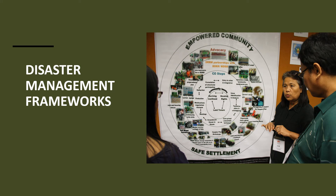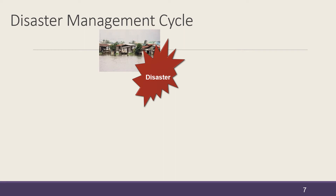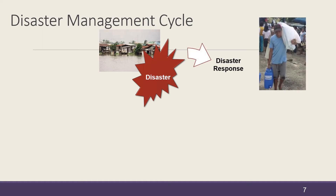Now let's look into some common disaster management frameworks. The most common framework looks into the different phases of disaster management. The starting point is the disaster. Immediately after the crisis is the disaster response phase, where various activities such as life-saving action and provision of relief goods are conducted. Humanitarian action on saving lives and reducing suffering are the primary concerns. The length of this phase is dependent on whether it is a rapid onset or a slow onset disaster.